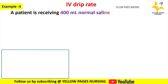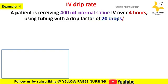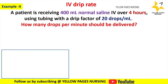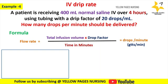Next, calculation of IV drip rate in drops per minute or GTTs per minute. A patient is receiving 400 ml normal saline IV over 4 hours using tubing with a drip factor of 20 drops per ml — how many drops per minute should be delivered? The formula for calculating flow rate is: total infusion volume multiplied by drop factor, divided by time in minutes, which gives drops per minute or GTTs per minute.